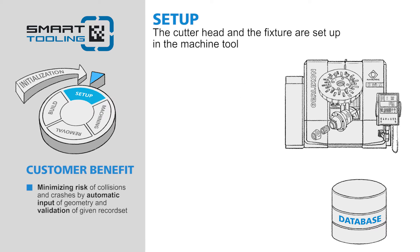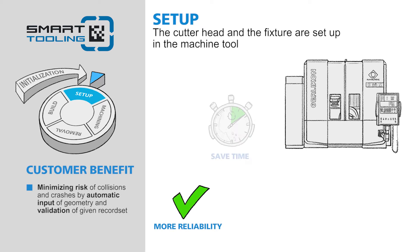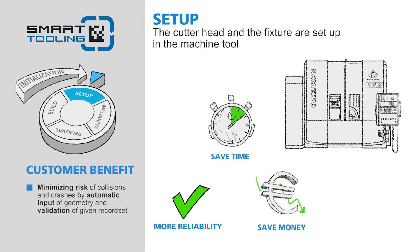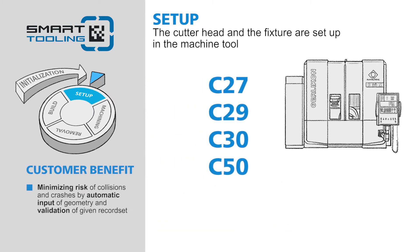Additional operator entries regarding tooling are not required, minimizing the possibility of machine crashes. You will not only benefit from the additional reliability, but also from having more efficient setup processes — save time and money. By the way, you can use Smart Tooling on various types of Oerlikon cutting machines.